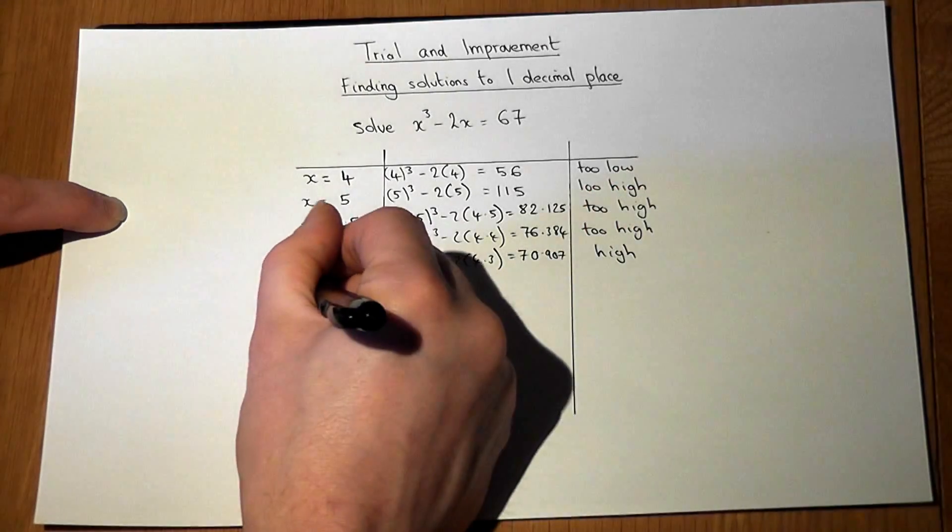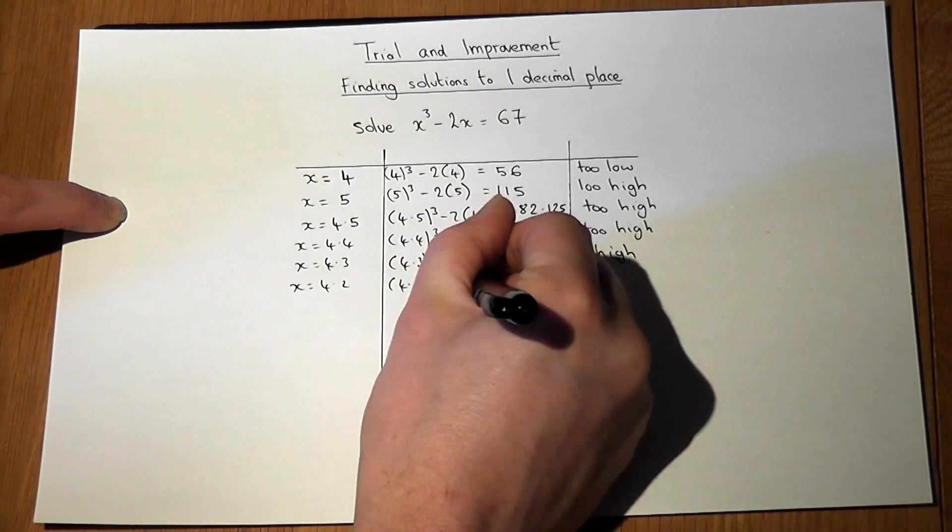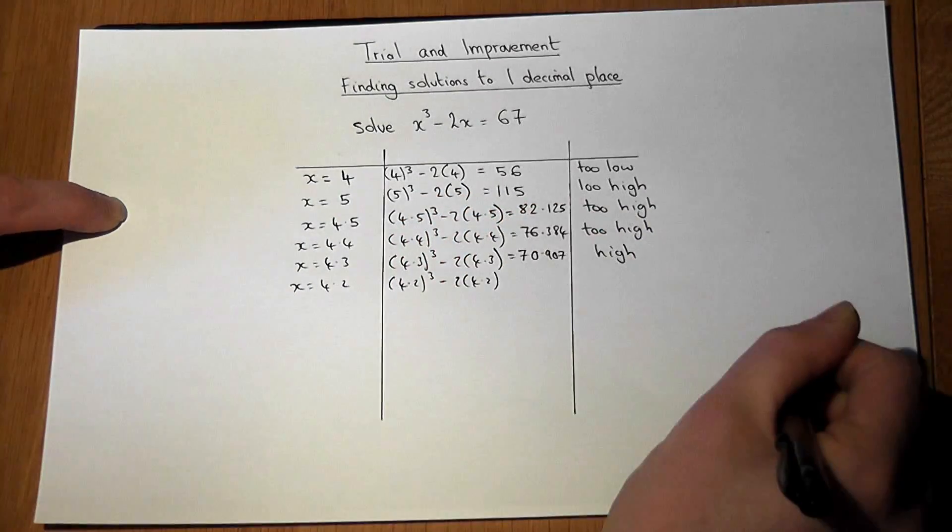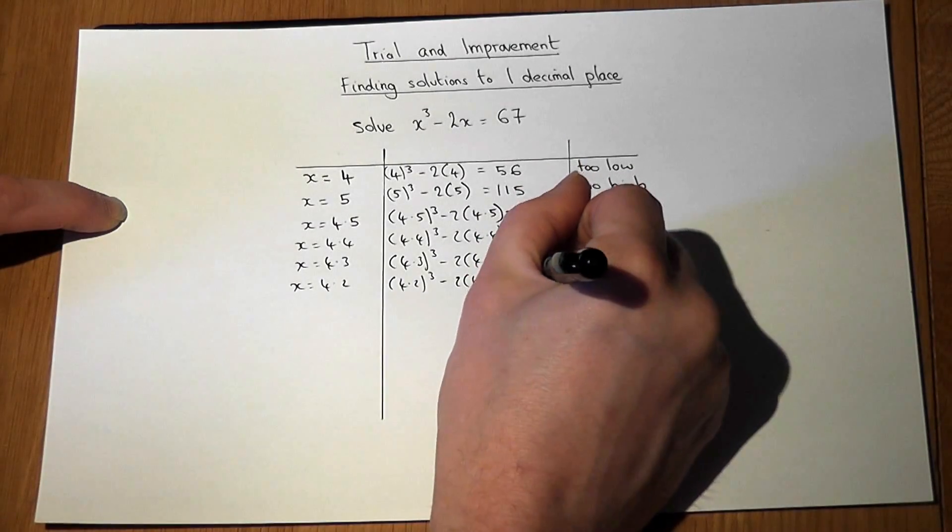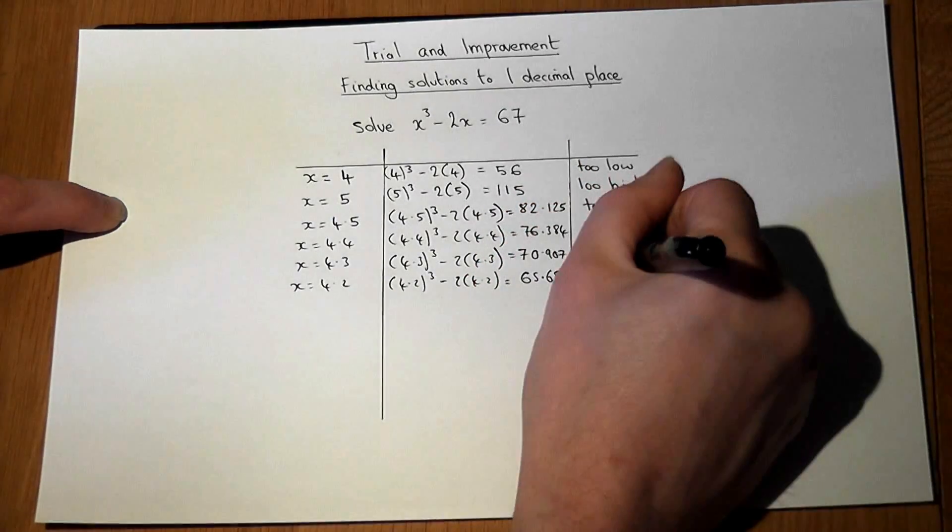So we'll try 4.2 and see what happens. This works out at 65.688, and we're too low.